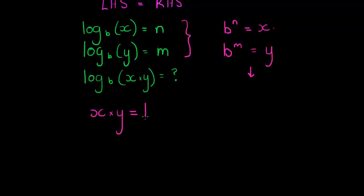x is equal to b to the power of n. So instead of x, I can say b to the power of n. And y is equal to b to the power of m. So instead of y, I say times b to the power of m.